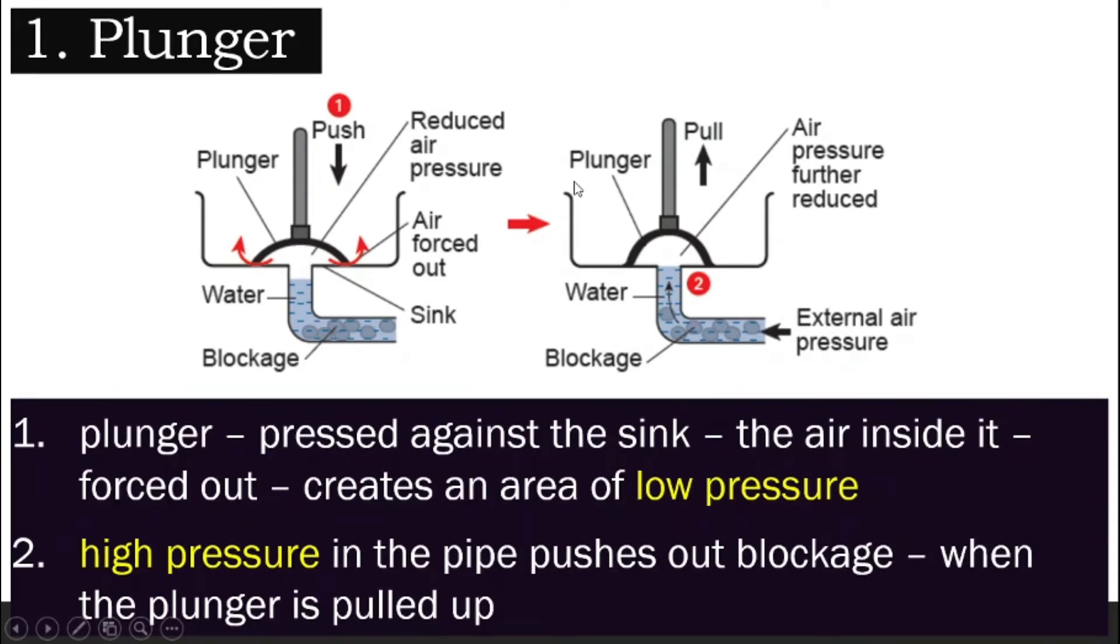I will display some explanation here which you can read while I try to explain. So look at this diagram here. When you push it down, what happens is the air inside here is forced out. As you pull, the space inside here becomes bigger with less air because the air has already been forced out. So what does that create? That creates an area of low pressure. When the pressure inside the plunger here is low, what happens is the external air pressure, the atmospheric pressure becomes bigger compared to here. And so the blockage will flow from the area of high pressure to the area of low pressure.